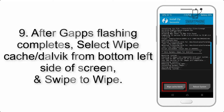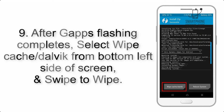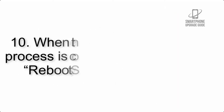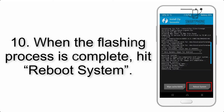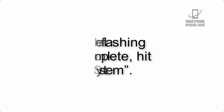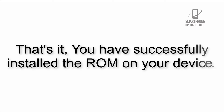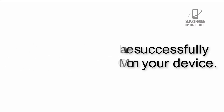Step 9: After GApps flashing completes, select Wipe Cache and Dalvik from the bottom left side of the screen and swipe to wipe. Step 10: When the flashing process is complete, hit Reboot System. That's it — you have successfully installed the ROM on your device.